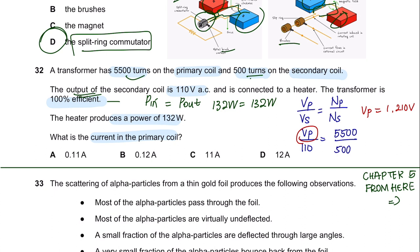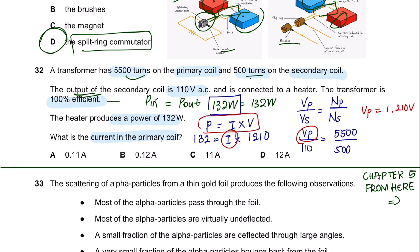Since we know the power in the primary is 132 W, we use P = IV. Substituting and rearranging: current = power ÷ voltage = 132 ÷ 1210 = 0.11 amperes.